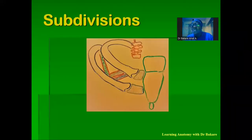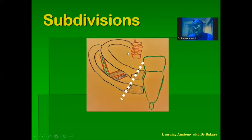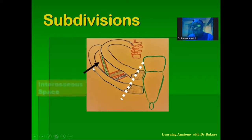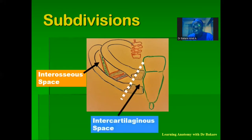The intercostal spaces can be further subdivided into two regions. The anterior continuations of the ribs are the costal cartilages. The space specifically between the ribs is called the intercostal space proper, while the space between the costal cartilages anteriorly is called the intercartilaginous space. This is the intercartilaginous space in the anterior part between the costal cartilages.